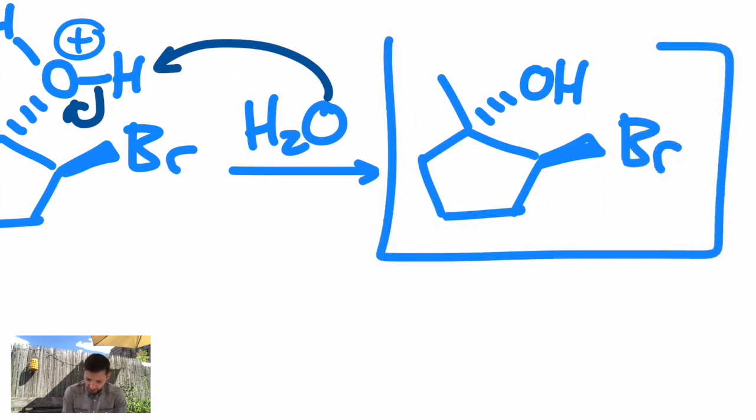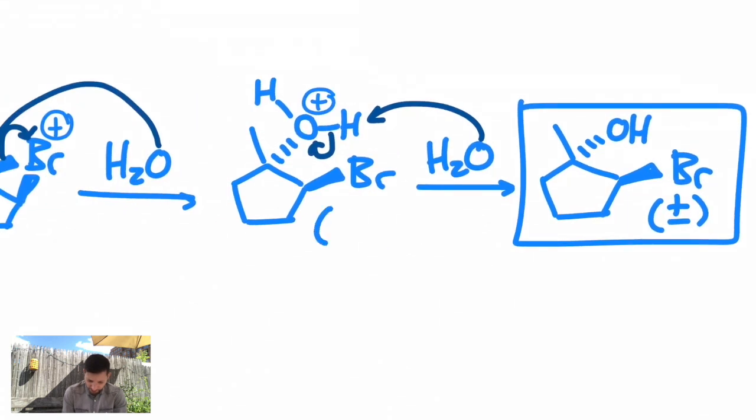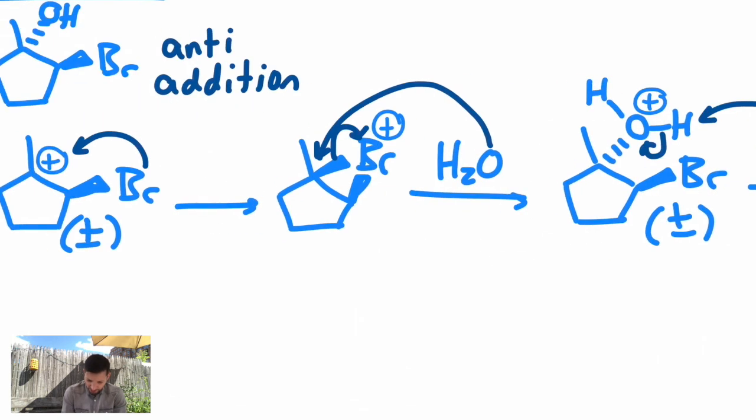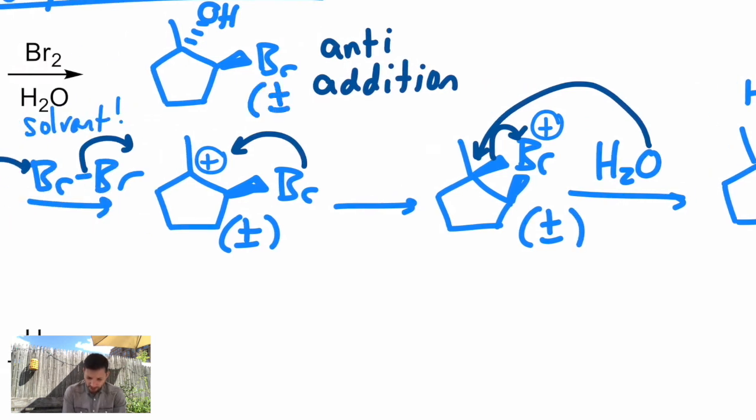This will look like SN1 chemistry. The water can take away that extra proton, and that's your halohydrin. This is only one enantiomer. You will get the racemic mix, and that's true at every intermediate once we made that chiral carbon.